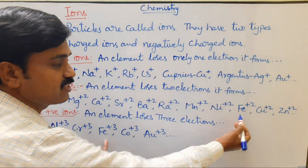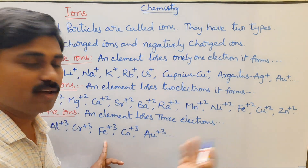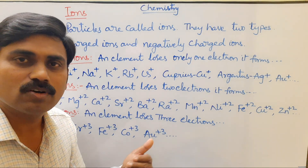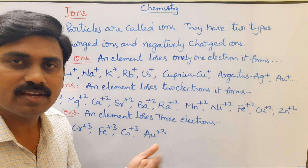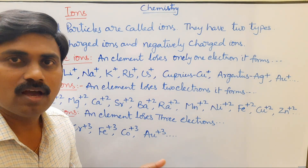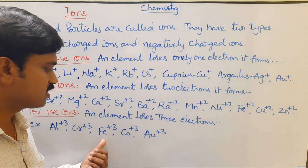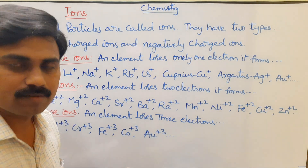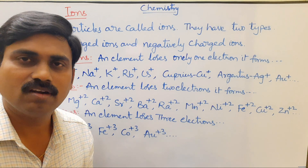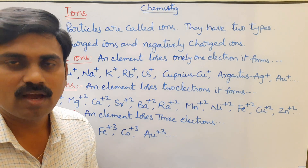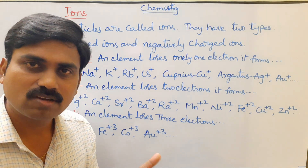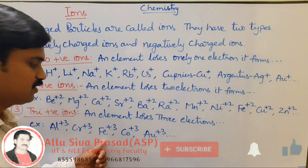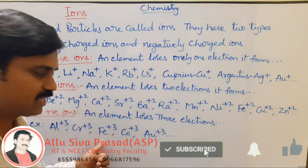Fe²⁺ is ferrous ion and Fe³⁺ is ferric ion. The lower oxidation state of an ion is called the -ous state, and the higher oxidation state is called the -ic state. So Fe²⁺ is ferrous and Fe³⁺ is ferric. Cobalt ion Co³⁺ is another example.